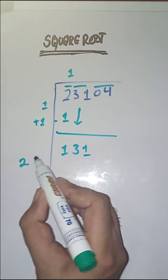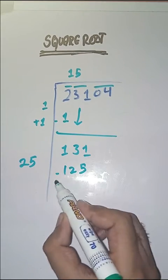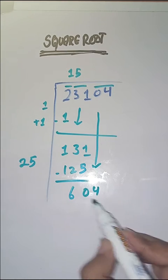Now we will take a number 5. 25 times 5 is 125 minus, we get 6. Next pair is 04, we'll bring it down.